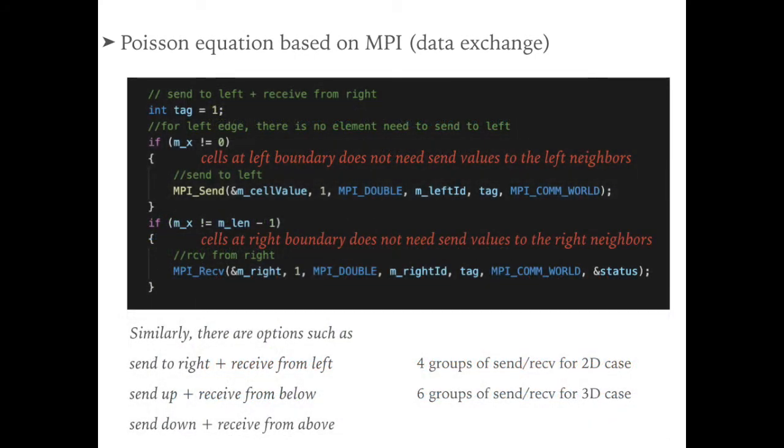We use MPI_Send function to transfer the actual cell values to the left neighbors if the current cell is not located at the boundary. Similarly, we use MPI_Receive to receive value from the right neighbors if the current cell is not located at the right boundaries.